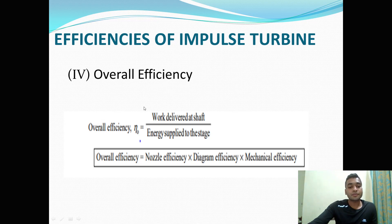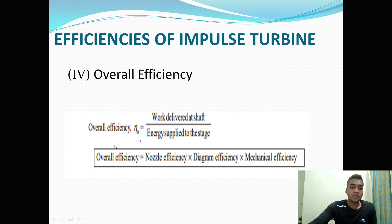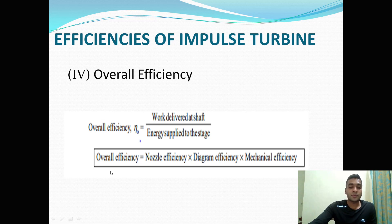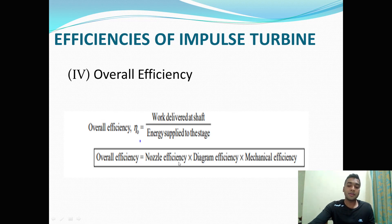Let us understand the fourth efficiency, that is overall efficiency. Overall efficiency is work delivered at the shaft — that is your brake power — divided by energy supplied to the stage, which is the enthalpy change in the nozzle at the inlet and outlet, that is H0 minus H1. The formula of overall efficiency is brake power divided by H0 minus H1. You can also obtain overall efficiency by multiplying nozzle efficiency, diagram efficiency, and mechanical efficiency.